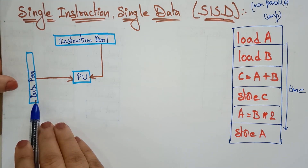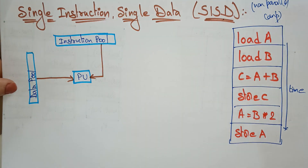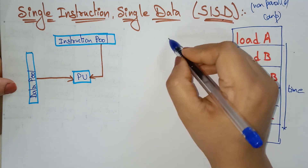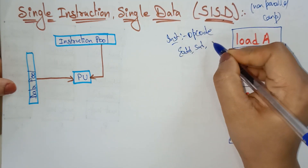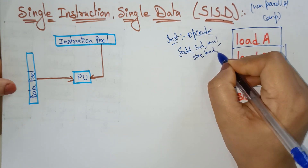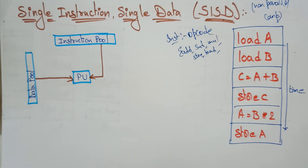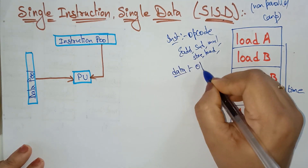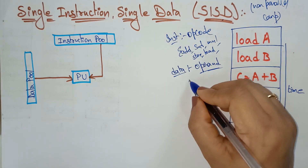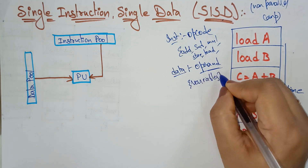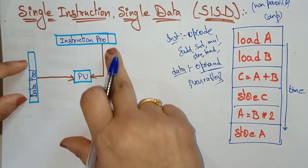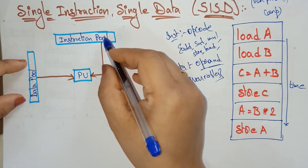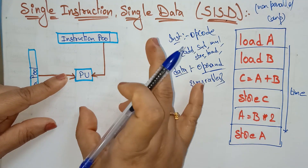In the SISD diagram, there is a data pool and an instruction pool. Instructions are nothing but opcodes — operations to be performed like addition, subtraction, multiplication, division, store, load. That is an instruction: doing some operation on variables. Data is nothing but the operand given by the user — variables like a, b, c — anything given by the user. With the help of the instruction and the data, the processing unit (PU) performs the operation.